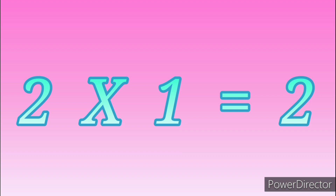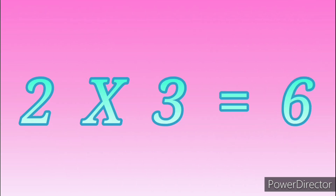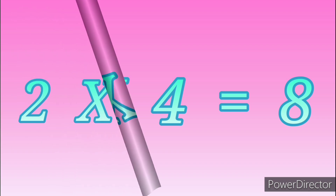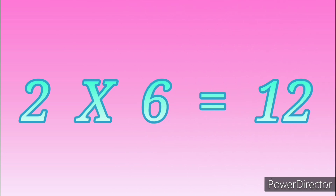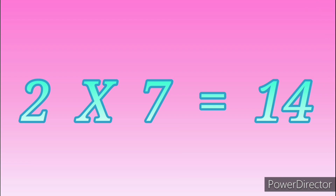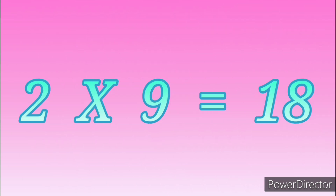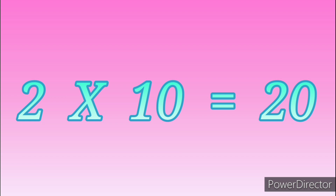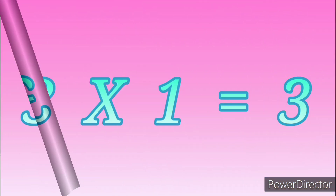Table of Two. Table of Three: 3 ones are 3, 3 twos are 6.